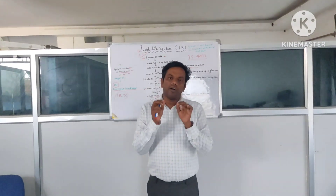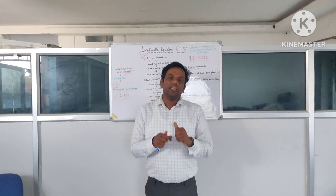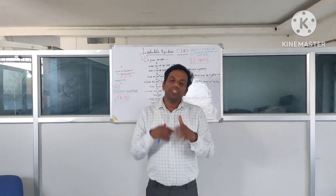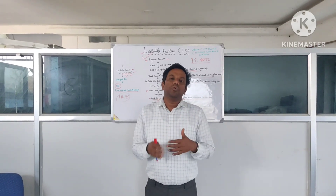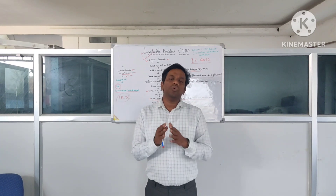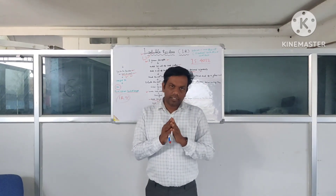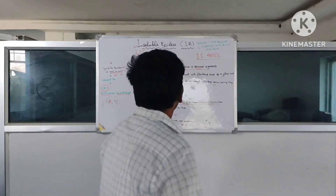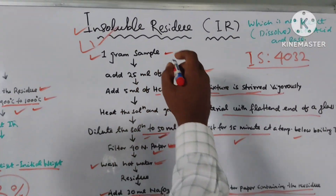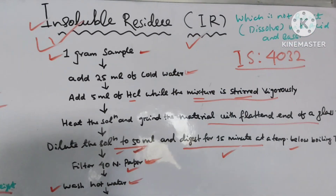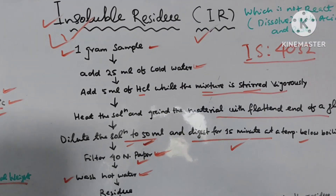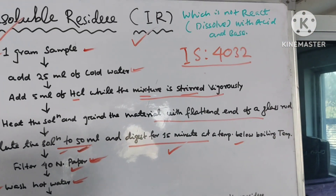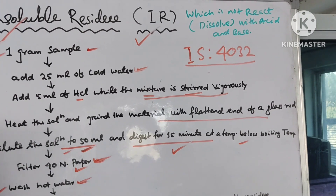It means percentage of impurities present. So today our lesson is how we determine, how we judge, how we do it step by step. Let us start. IR means insoluble residue - it is the material which does not react or dissolve with acid and base. Things which do not react or dissolve in acid and base are called IR.